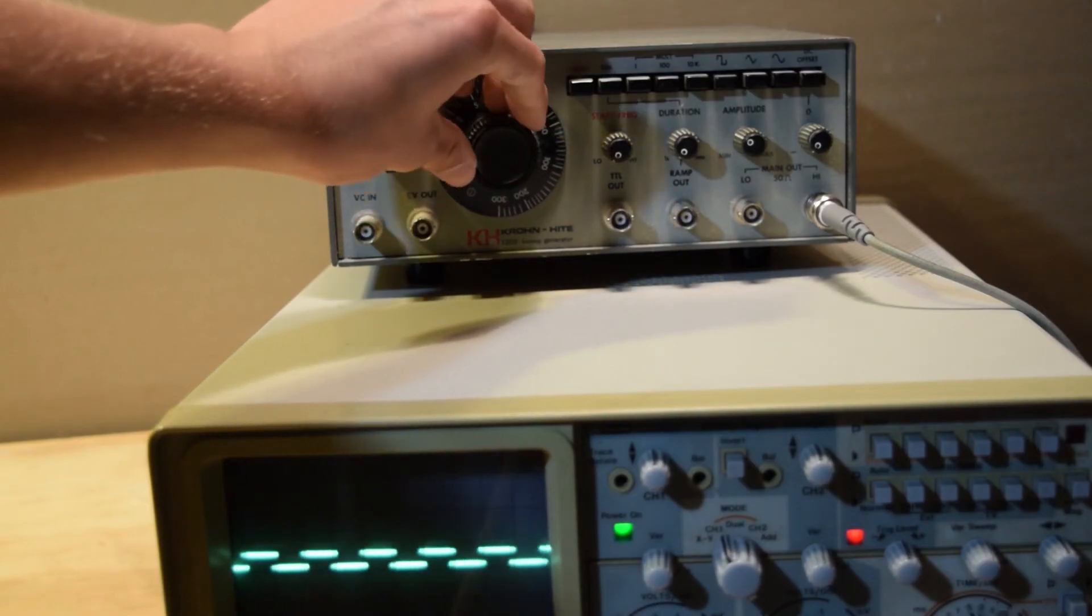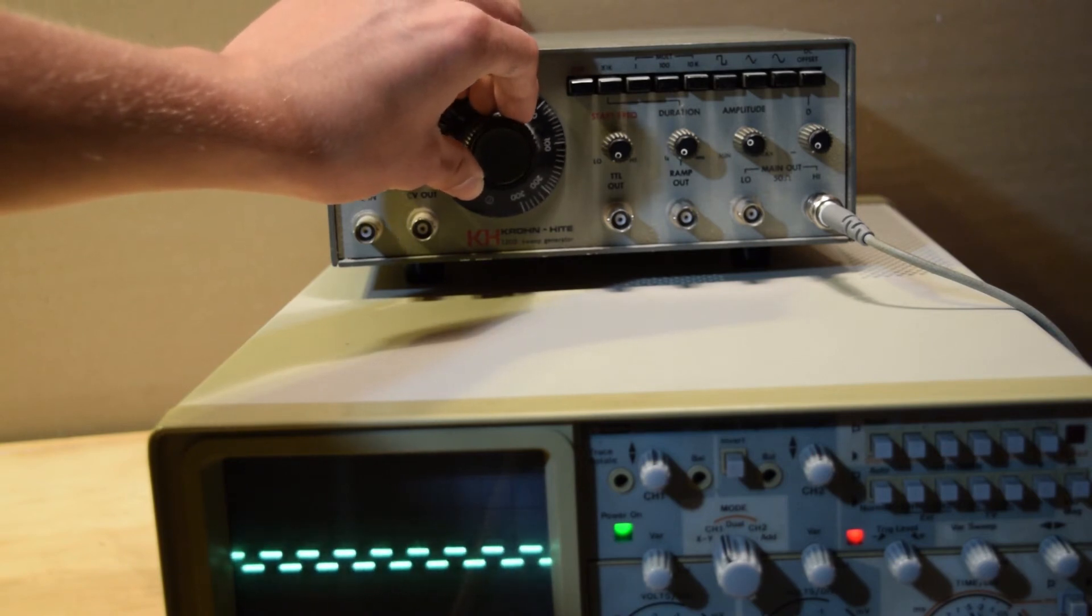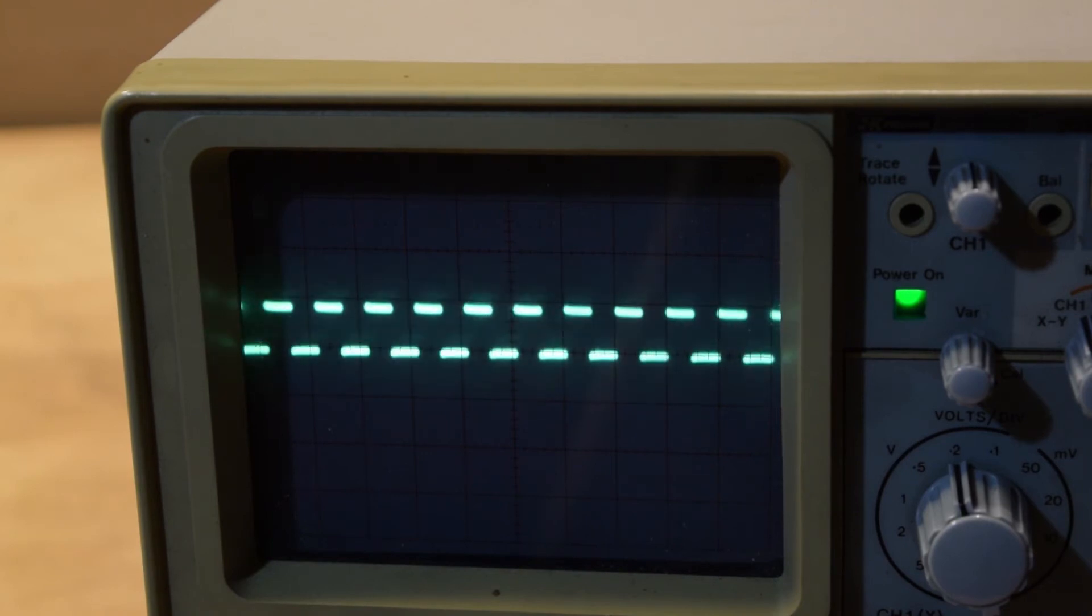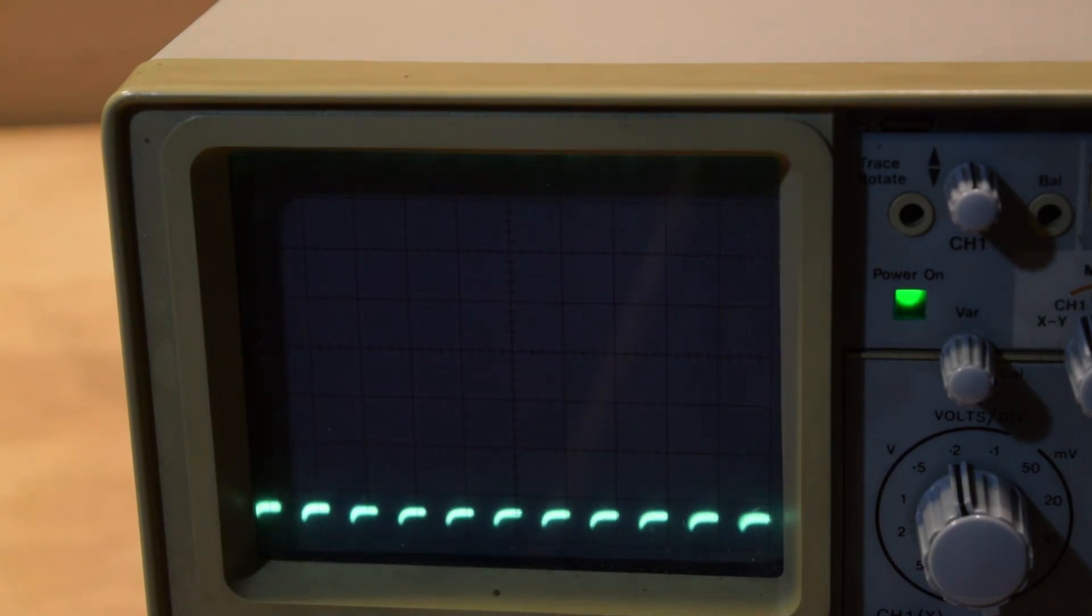If I mess with the frequency output of the sweep generator, you can see how it affects the signal on the screen. If I adjust the amplitude of the signal, you can see the peak and the bottom of the signal get further and closer apart.